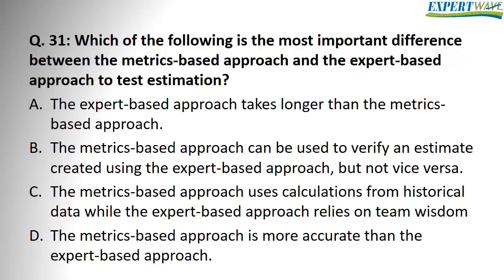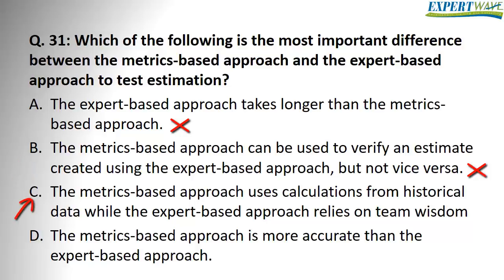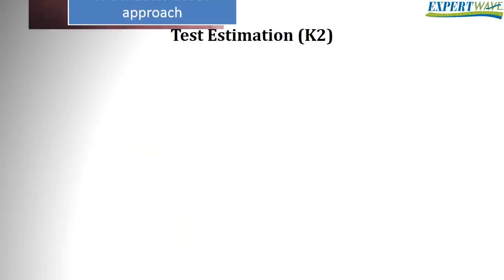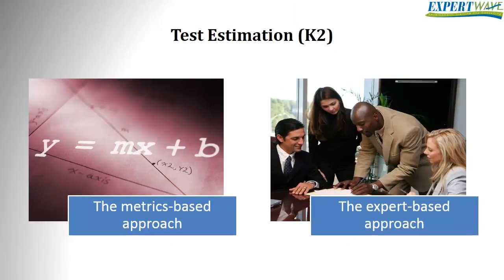Question 31: which of the following is the most important difference between the metrics-based approach and the expert-based approach to test estimation? Answer A: the expert-based approach takes longer than the metrics-based approach — this is wrong; you just ask someone how long a task takes and they answer, so it should be quick. Answer B: the metrics-based approach can verify an expert-based estimate but not vice versa — wrong; the two approaches can verify each other. Answer C: the metrics-based approach uses calculations from historical data, while the expert-based approach relies on team wisdom — this is correct.